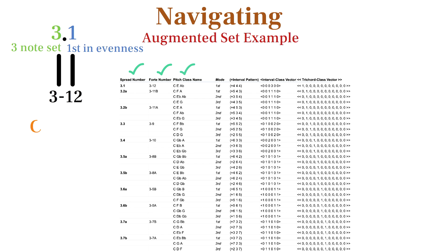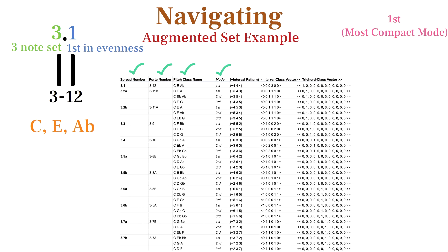Then we have the pitches for each mode written out as letters, starting on C. Next we see the mode ranking according to compactness.